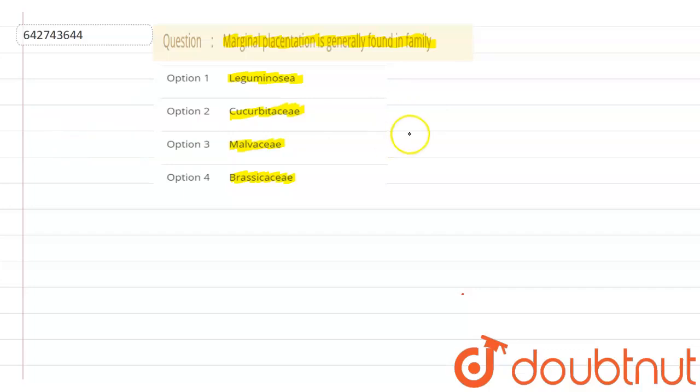So marginal placentation is generally found in the family of Leguminose. In Leguminose, the ovules are attached at the margins.